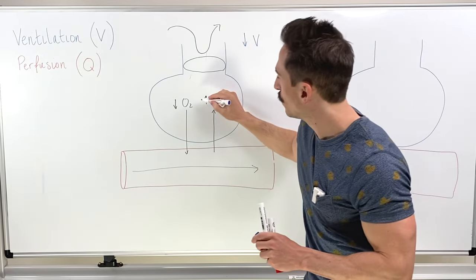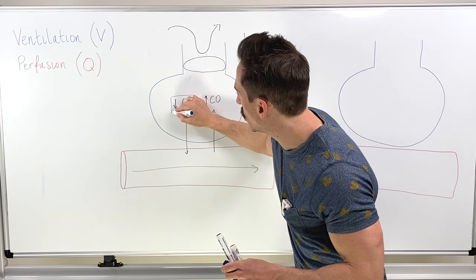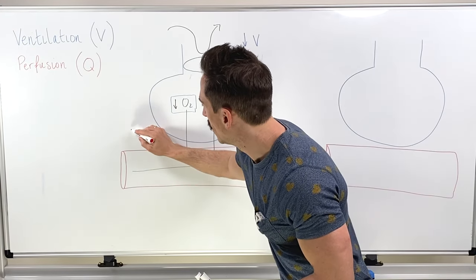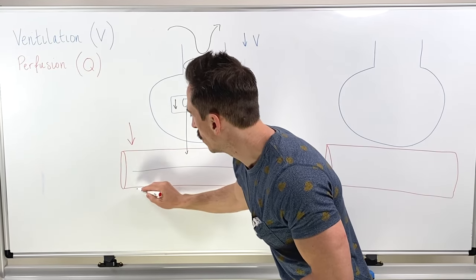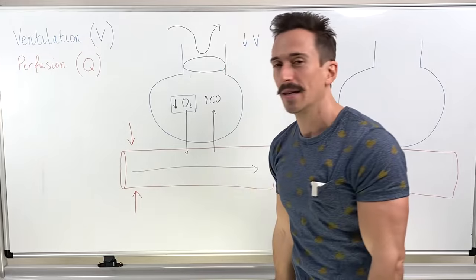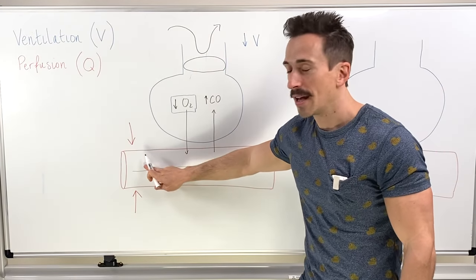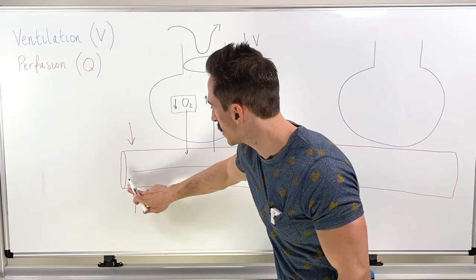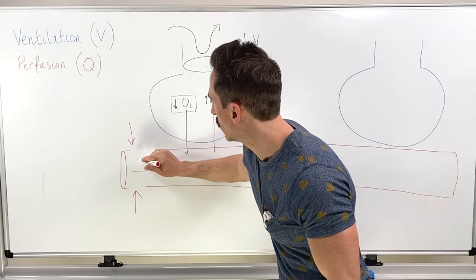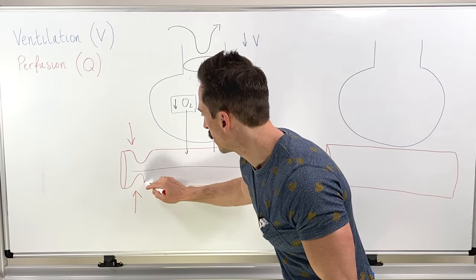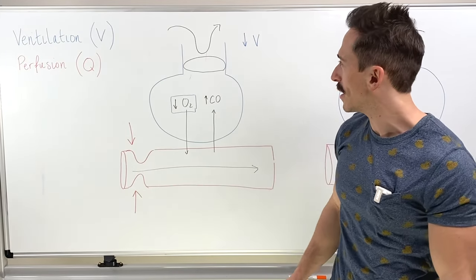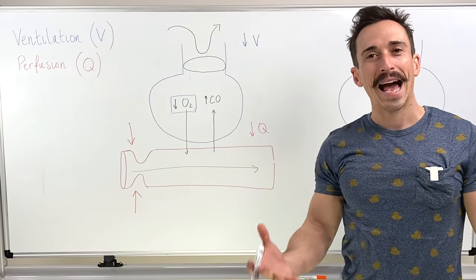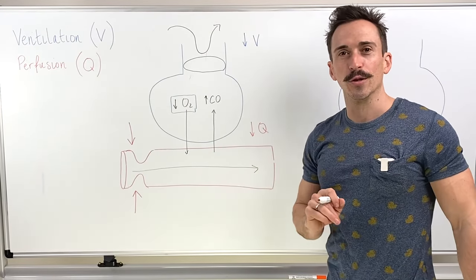Here's the really cool thing: the decrease in oxygen in the alveolus is the trigger to tell the pulmonary arteriole to constrict. Decreased oxygen results in vasoconstriction. What does that mean for perfusion coming past? If that vessel is now constricting, perfusion drops. We have matching — ventilation dropped, and perfusion dropped.